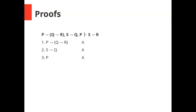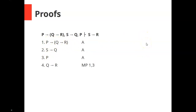Another example. We have two conditionals and a simple sentence, and we're trying to end up with a conditional. That should raise a red flag for hypothetical syllogism. With lines one and three — a conditional and its antecedent — we use modus ponens to infer if Q then R on line four. Now with lines two (if S then Q) and four (if Q then R), we can use hypothetical syllogism to infer if S then R on line five. That's where we're trying to go, so we're done.